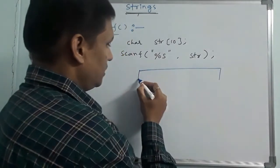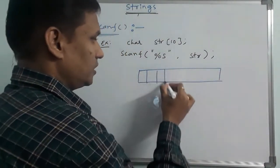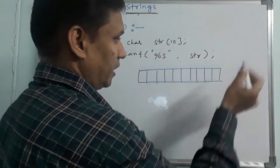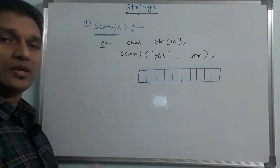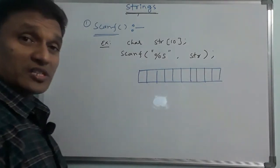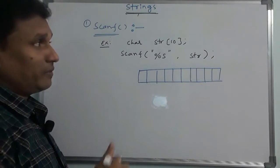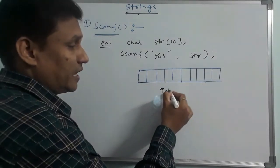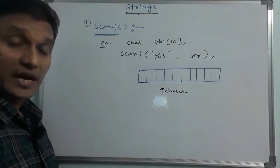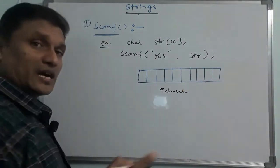For example, if we have 10 memory blocks — that is, a character array of size 10 — the last element is the null character. So we can only read a maximum of 9 characters. The last character position is reserved for the null value.